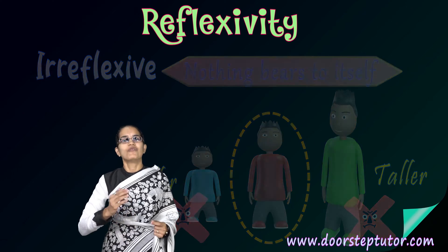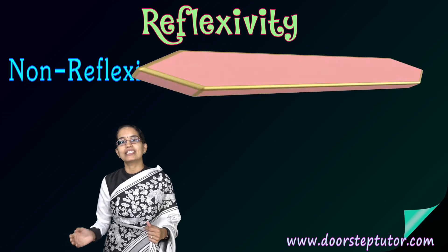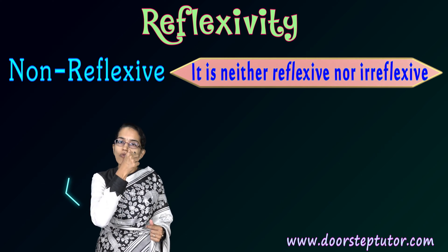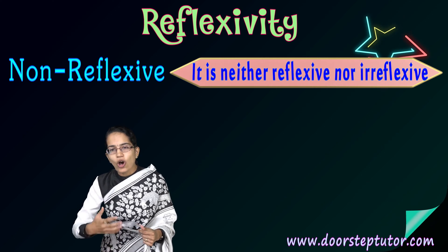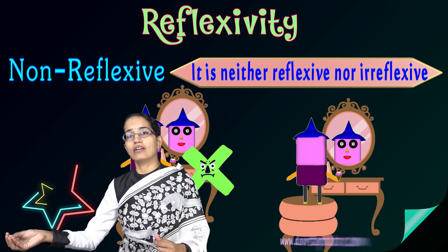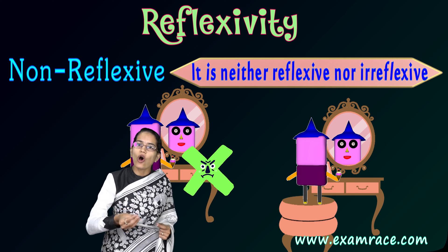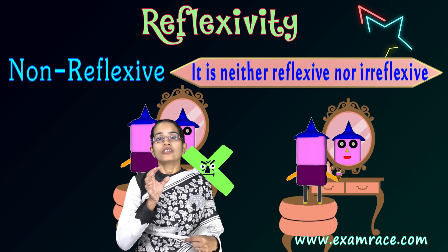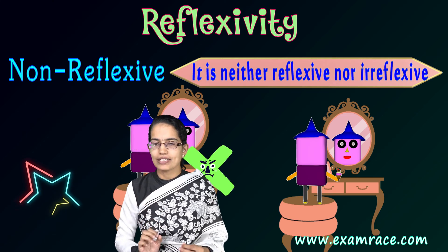The next is non-reflexive, which is furthermore interesting. Non-reflexive means it is neither reflexive nor irreflexive. Simply said, I cannot infer that somebody loves oneself or somebody does not love oneself. So that is an example of a non-reflexive relation — it is neither reflexive nor irreflexive.